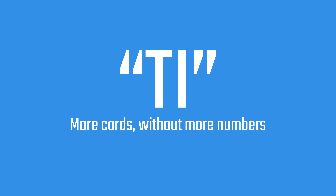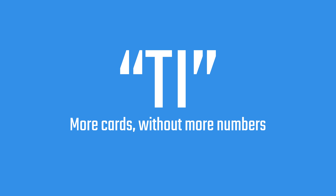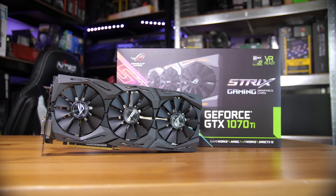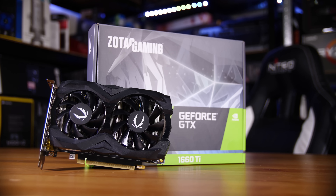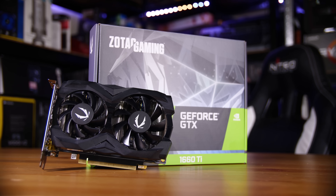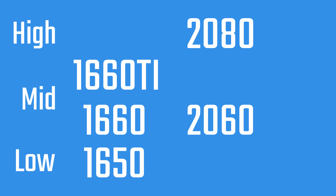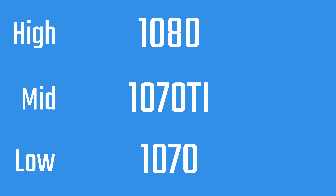The Ti is Nvidia's way of adding more levels of products beyond the specific numbers, often after the original cards have been released. The Ti denotes a slightly better version of the card it's named after — so for example, a 1070 Ti is a faster card than a 1070, but not as fast as a 1080.